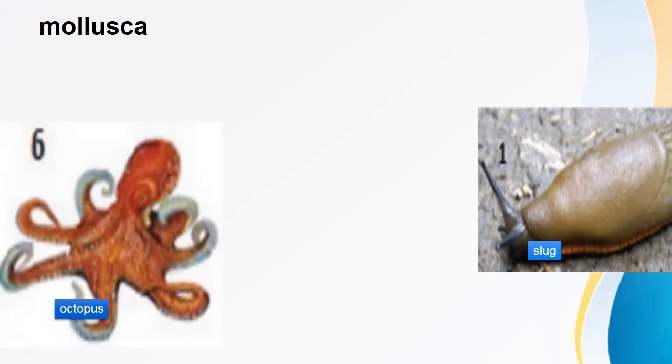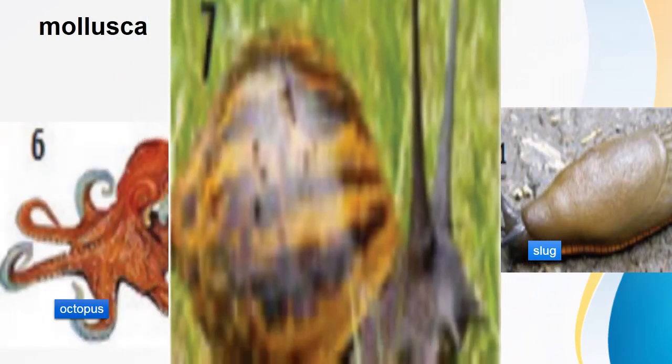Phylum Mollusca — organisms in this phylum are called molluscs. Examples include slug, octopus, snail, and squid. Characteristics: they have soft and unsegmented bodies. Nearly all of them have shells, except octopus and squid. They have a foot used for locomotion and attachment to the substratum.